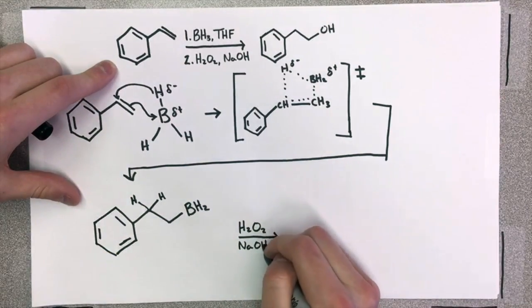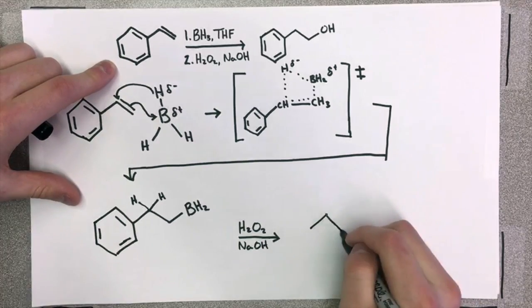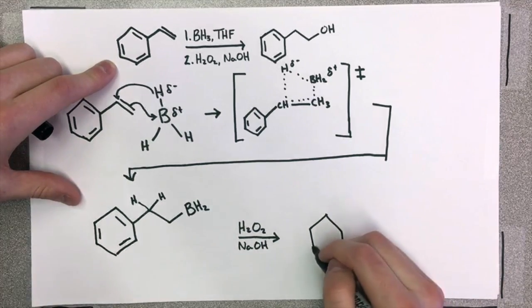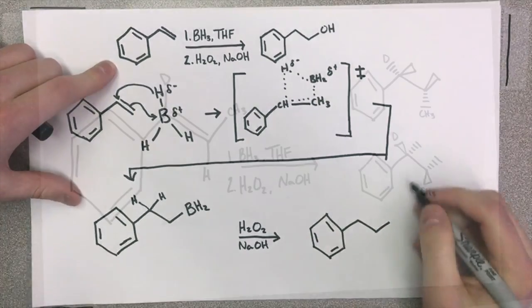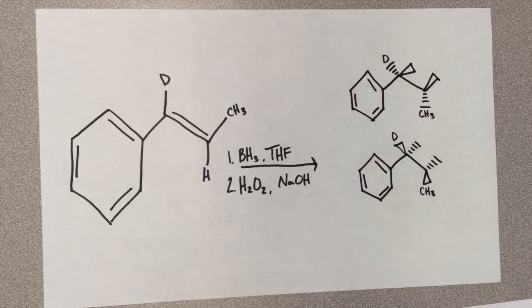And then from there, you can go ahead and add hydrogen peroxide and NaOH to replace that BH2 with an OH group. Alright, switching out for Grayson now.